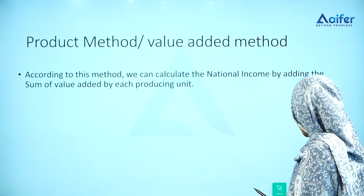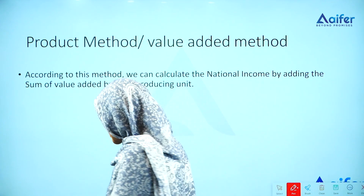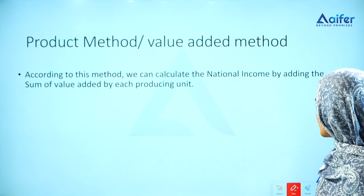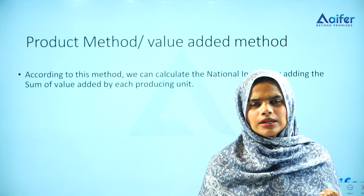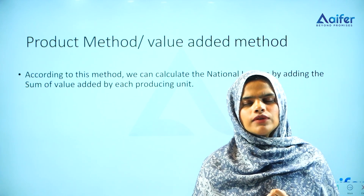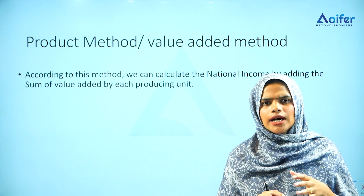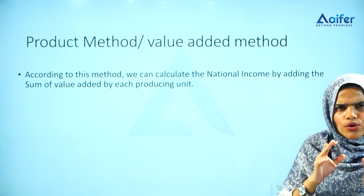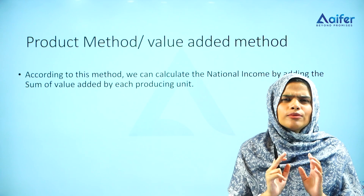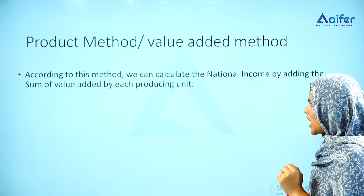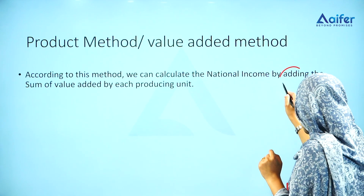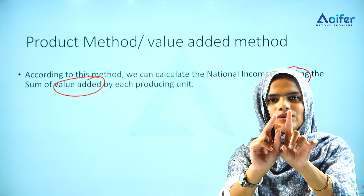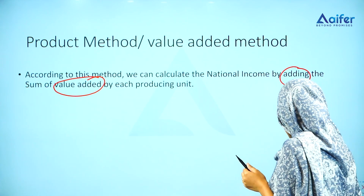The first method is the product method, also called the value-added method. What is the value-added method? It is not about the whole economy or a single firm. There are many different producing units — food product producers, industrial production firms. According to this method, we calculate national income by adding the sum of value added by each producing unit.